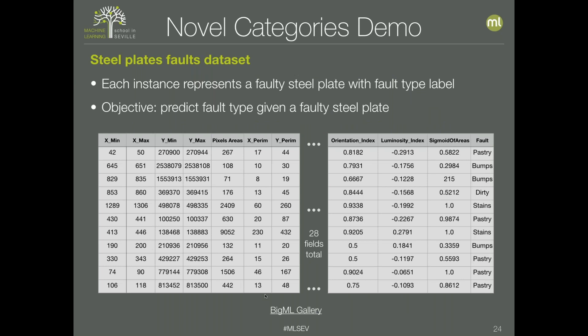The dataset is about steel plate faults from a factory. Each instance represents a faulty steel plate, and the objective field represents the type of fault. Attributes include measurements and luminosity from each piece. The factory can measure this data automatically but can't automatically identify the fault type — a classifier would predict the fault based on the measured data.